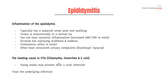Next, we have epididymitis, or epididymo-orchitis. Epididymitis is just inflammation of the epididymis. It typically has a subacute onset in terms of pain and swelling, and the testes themselves tend to be anatomically normal. You can have systemic inflammation — about 95% of patients with epididymitis have an increased white cell count or CRP level. Quite commonly, the scrotum has overlying erythema and edema with an intact cremasteric reflex. You can often also have concurrent urinary complaints like discharge and dysuria, which indicates where the infection may have come from.